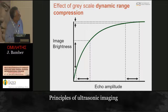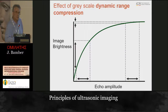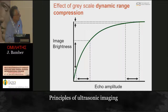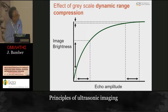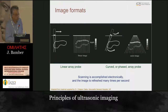This relationship is adjustable - it's called the dynamic range control, which we'll play with in the hands-on demo. An important point: at low echo amplitudes, a wide range of amplitudes translates to a big range of image brightness, making it easy to distinguish between them. But at high amplitudes, the same range translates to a very small range of brightnesses, making discrimination very difficult - worth bearing in mind when interpreting images.